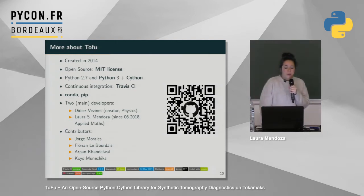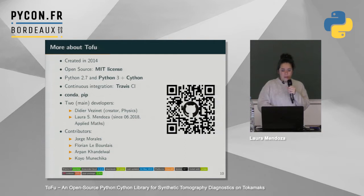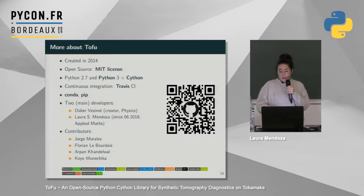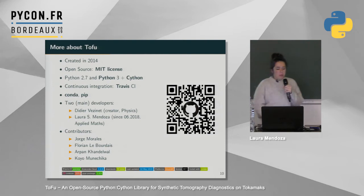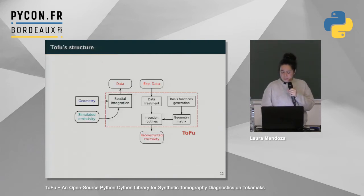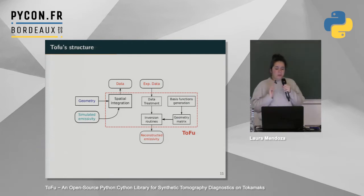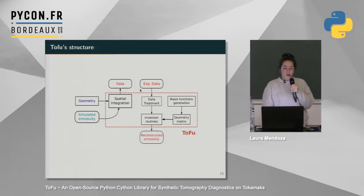This is how ToFu was born, created in 2014. Until this week it was supporting Python 2.7 and Python 3, but now it's only Python 3. It has a Cython backend for all the core functions of the library. It has continuous integration with Travis CI, is packaged with conda and pip, and there were two core developers. The creator was a physicist who learned to code at the beginning, and I joined the project in June 2015. Now there are more and more contributors, which we're very happy about.